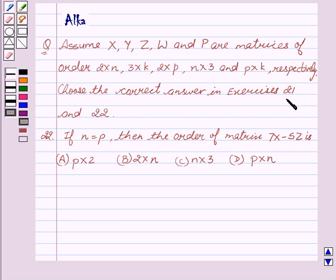Choose the correct answer in exercises 21 and 22. If n equal to p, then the order of matrix 7x minus 5z is: a) p cross z, b) 2 cross n, c) n cross 3, d) p cross n.